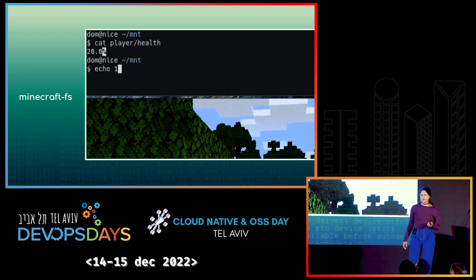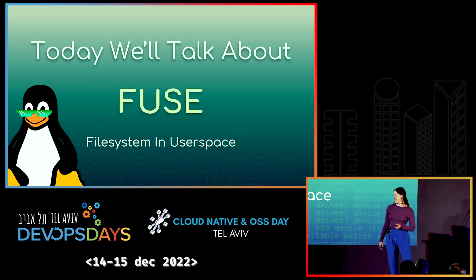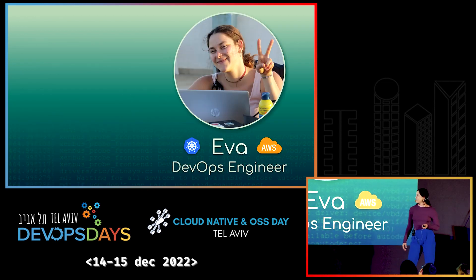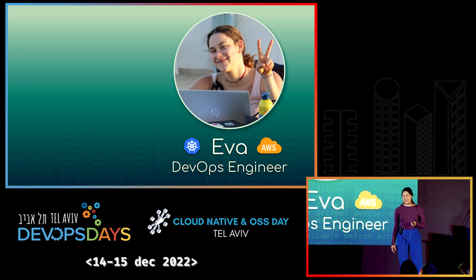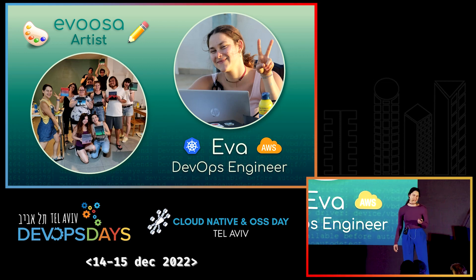But how did they do this? They did this with something named Fuse, and this is what we're going to talk about today. It stands for File System in User Space. My name is Eva. I'm a DevOps engineer in a small startup during the day, and I'm also an artist. I'm also known as Vusa on social media.